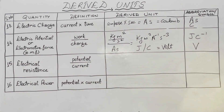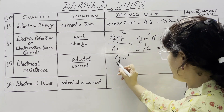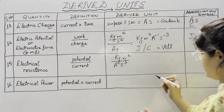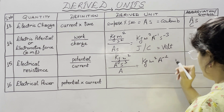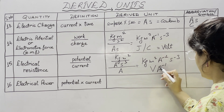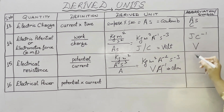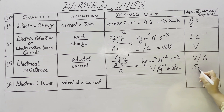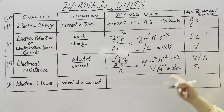The next physical quantity is electric resistance. It is potential divided by current. The SI unit of potential is kg m² A⁻¹ s⁻³ and dividing by current (ampere) gives kg m² per ampere square per second cube. We can write it as volt per ampere, or ohm. The resistance of a conductor is said to be 1 ohm if a current of 1 ampere flows through it when the potential difference across its ends is 1 volt.